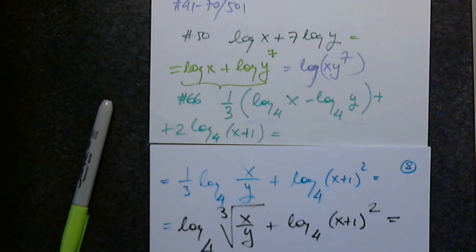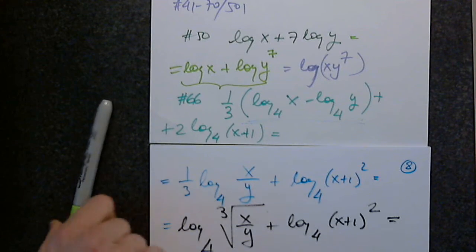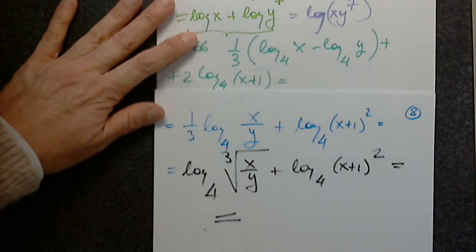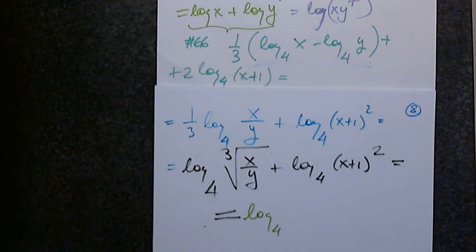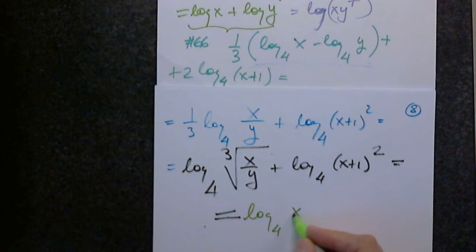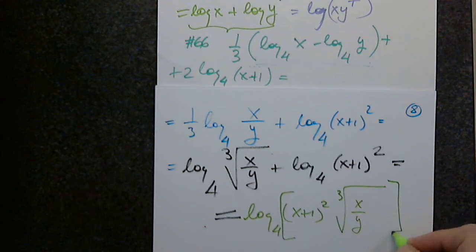One more step — the last step: log base 4 of x plus 1 squared times the cube root of x over y. You can put everything in brackets so we know it's multiplied and they are together. Very good, Tiffany. Thank you.